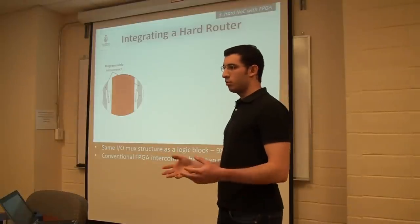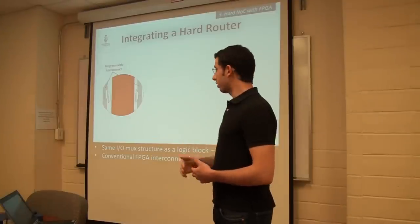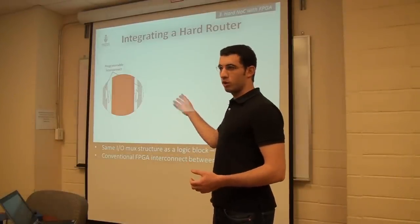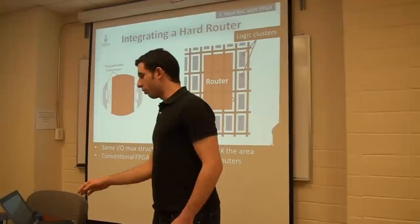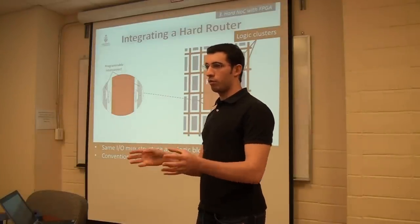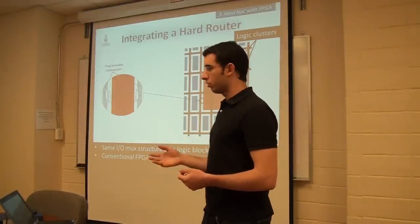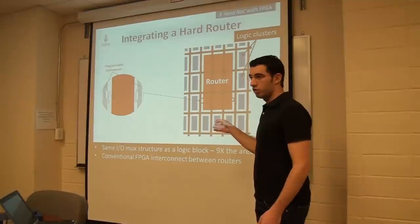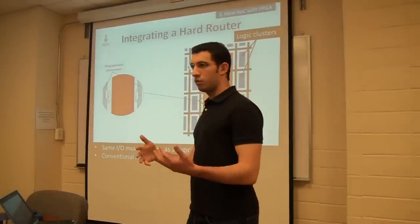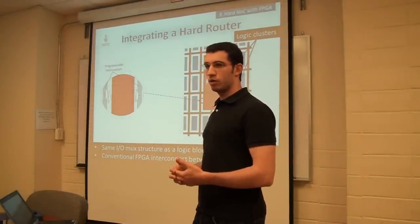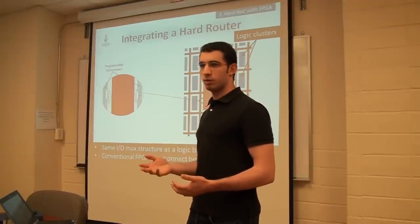For the completely hard network, we used the same interconnection structure used for a logic block: two levels of programmable muxing on the input and one level on the output. After accounting for the area of all that programmable muxing for all ports on the router, it turns out to be nine times the area of a logic block. The drawing is to scale. We also verified that enough wires come in and out of the router so it doesn't produce routing choke points — it has the same routing flexibility as a logic block.